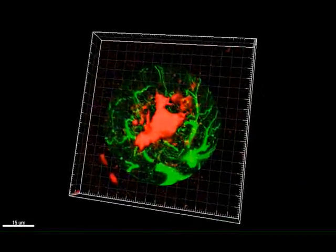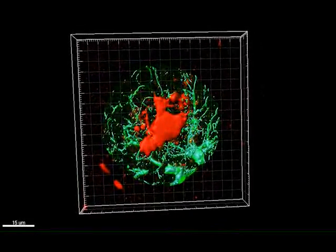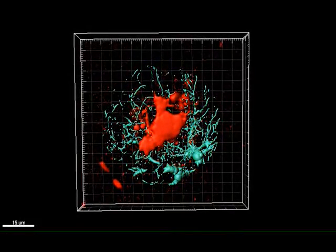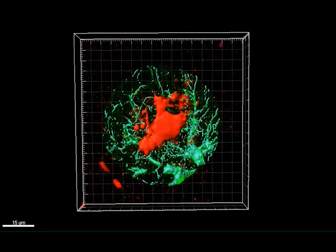Finally, using the filament tracer function, the volume of astrocytes is estimated in the proximal region surrounding the plaques, illustrating astrocyte processes in direct contact with the plaques.